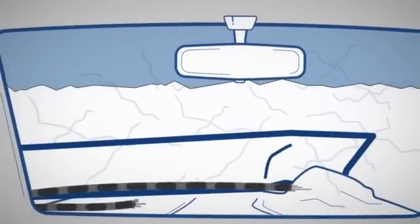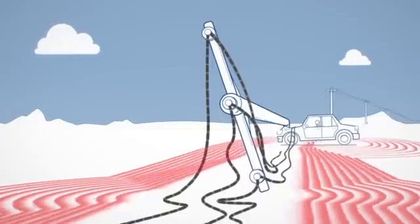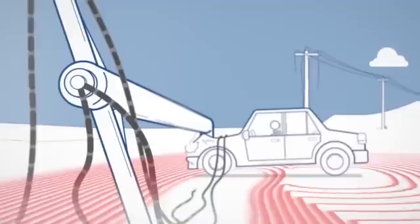If power lines fall, electricity, which is invisible, can run through your car and into the ground.